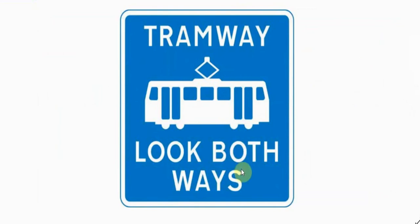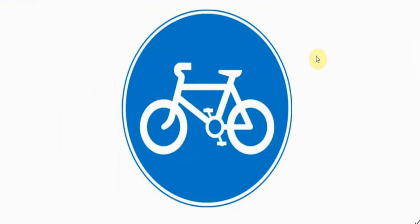This is a sign you'll see more and more as trams become more common - it's saying there are trams here, look both ways, do be careful. And here's another sign we'll likely see more often: only cycles can go along this section of the road. That means a cycle route.